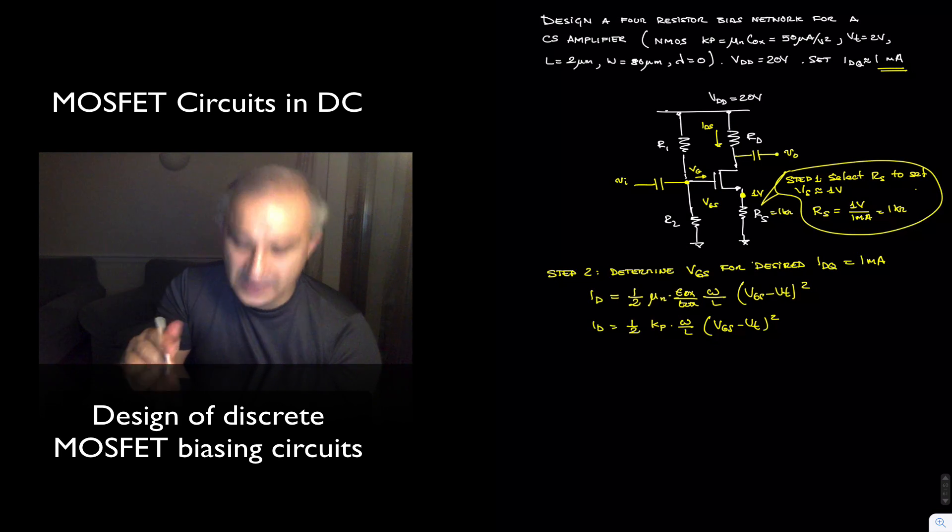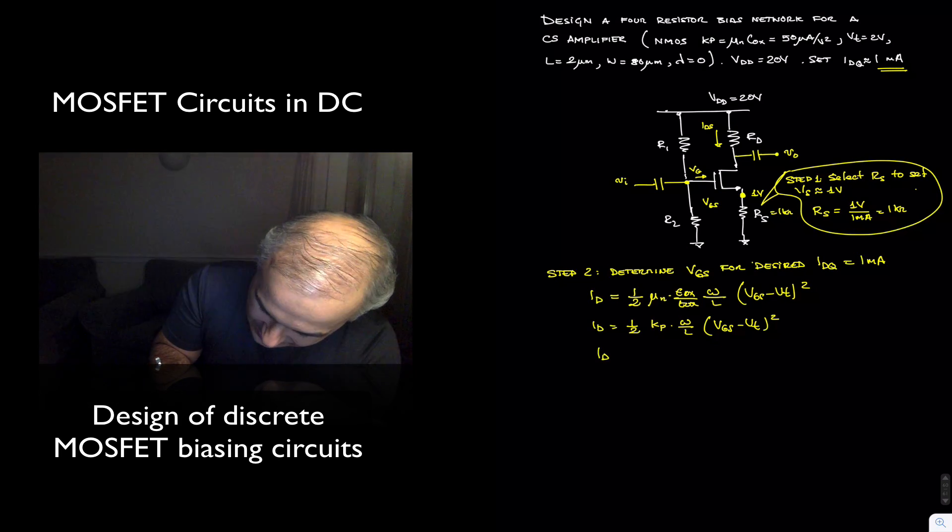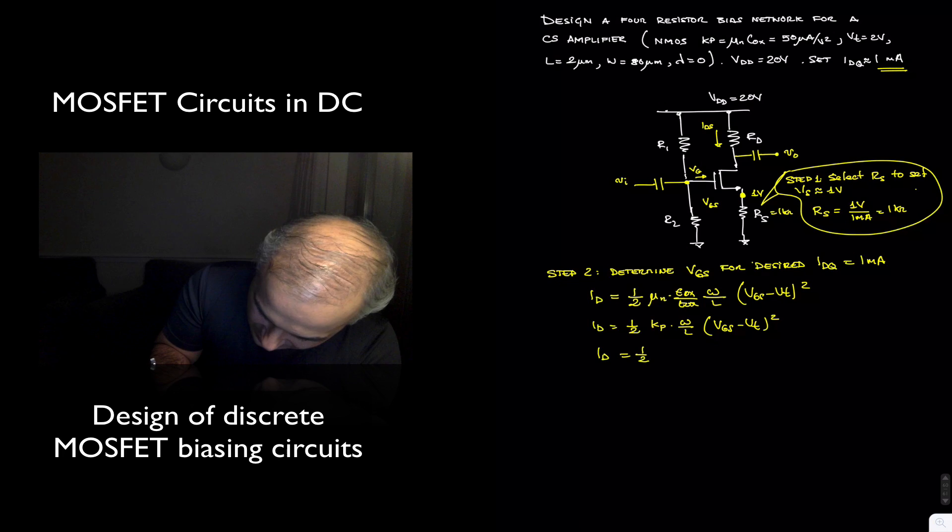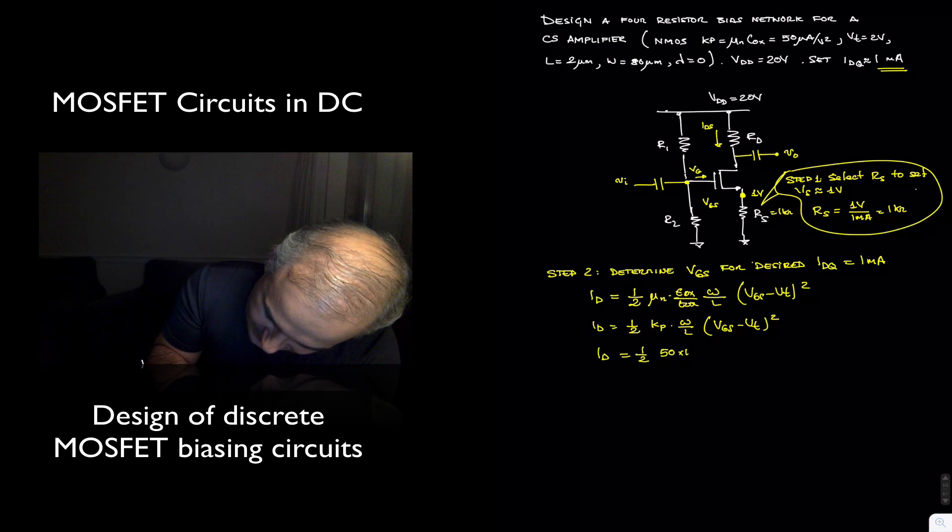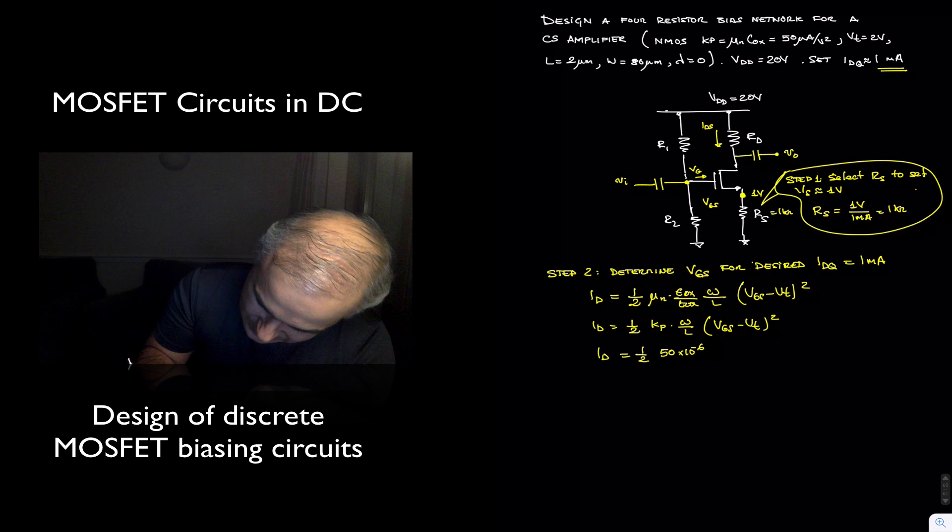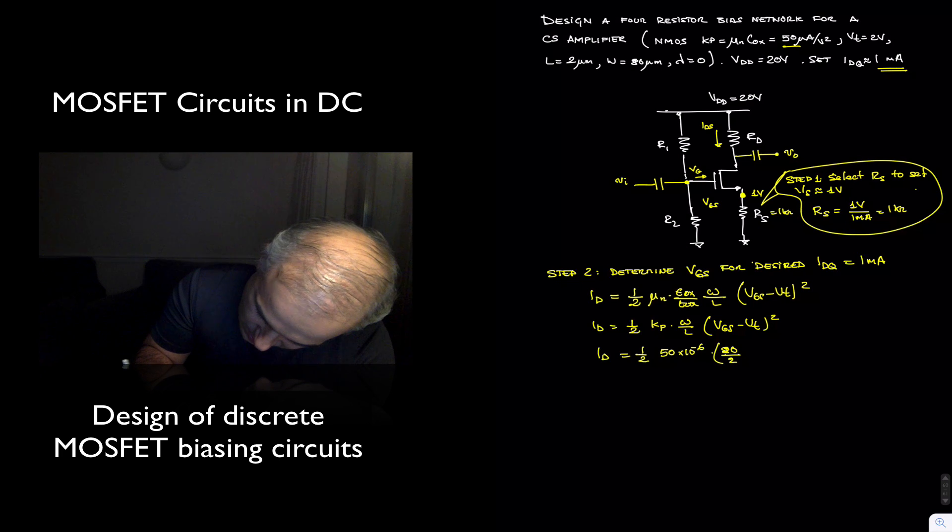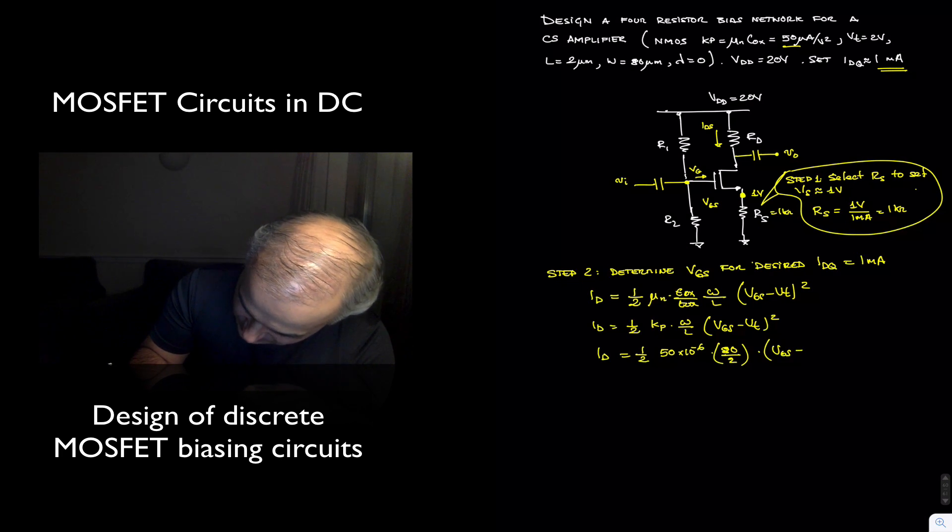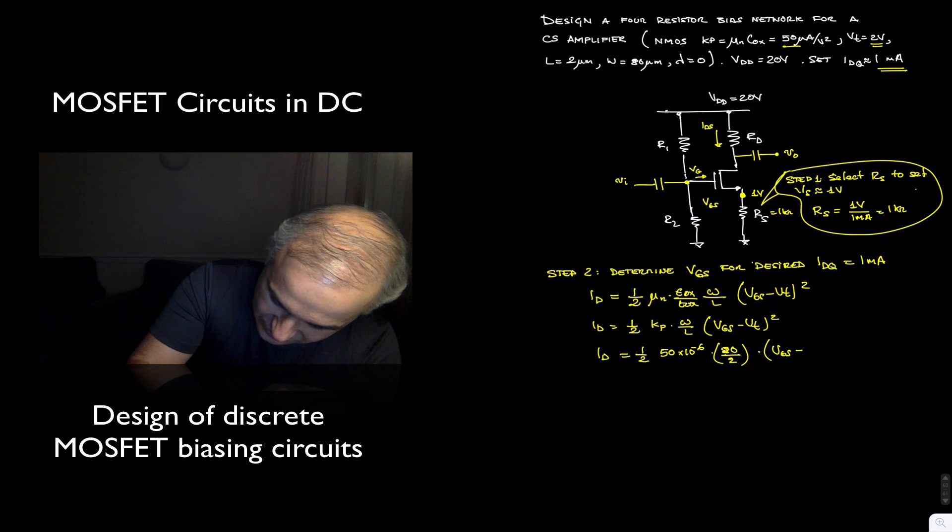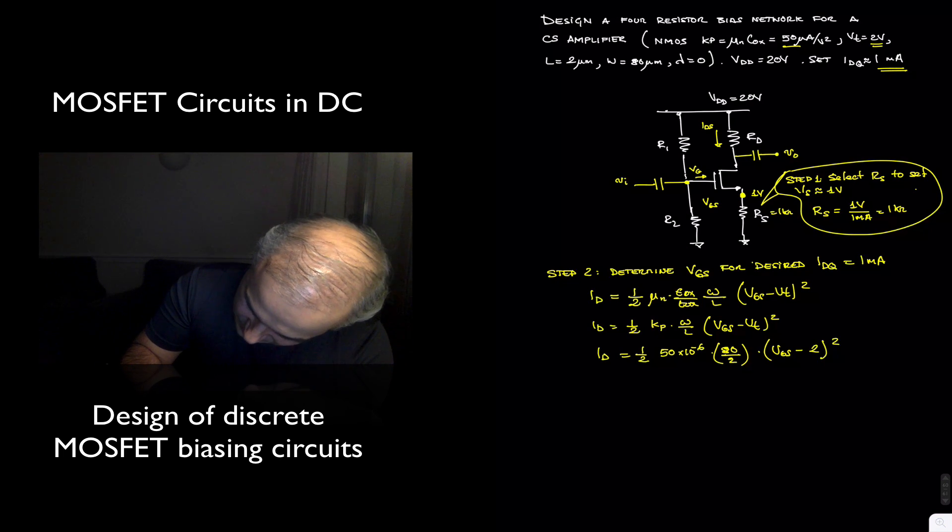Which in this case, let's plug in the values. I_D is equal to one-half and we have 50 times 10 to the minus 6 times 80 micro divided by 2 micro times V_GS minus 2 volts, which is the threshold voltage, squared.